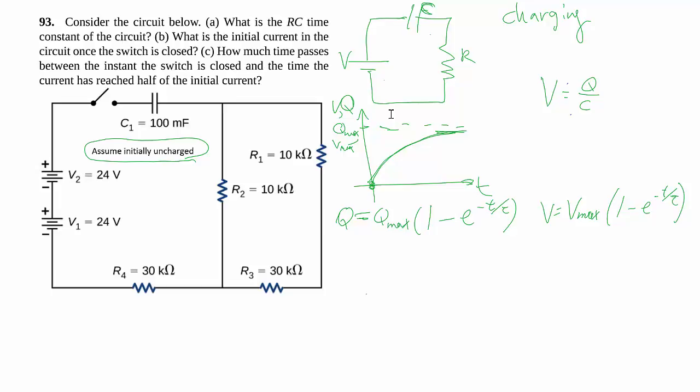But the thing I didn't talk about so much is this tau here. What is this tau? This tau is called the time constant. It's a number that characterizes how long it takes to charge up the capacitor. We know how much it charges up to, but we don't know how quickly it does it. And that's what the time constant does.